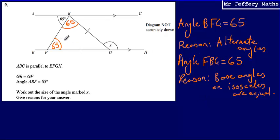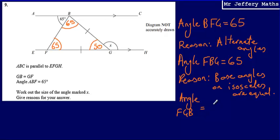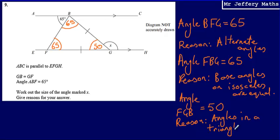So we've found two angles. Now, because that angle is 65 and that angle is 65, I can figure out the remaining angle in the triangle, since angles in a triangle add up to 180. 65 plus 65 is 130, so this angle must be 50. Angle FGB is equal to 50 degrees. The reason is that angles in a triangle sum to 180 degrees.